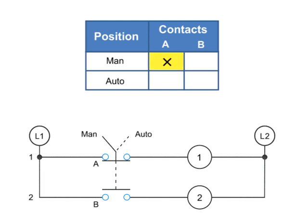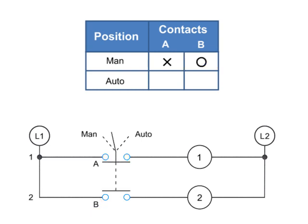An X is placed in the table if a contact is closed in any position. An O is used to depict that a contact is open. Thus, if the selector switch is in the MAN position, A is X or closed and B is O or open. When the switch position is set to AUTO, A is O or open and B is X or closed.